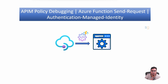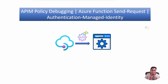Azure API Management is a crucial component in modern application architectures, acting as a gateway that manages and secures APIs. By providing a centralized layer for API management, APIM enables organizations to control access, enforce policies, monitor usage, and ensure consistent and reliable API delivery. One of the key features of Azure API Management is its policy engine.